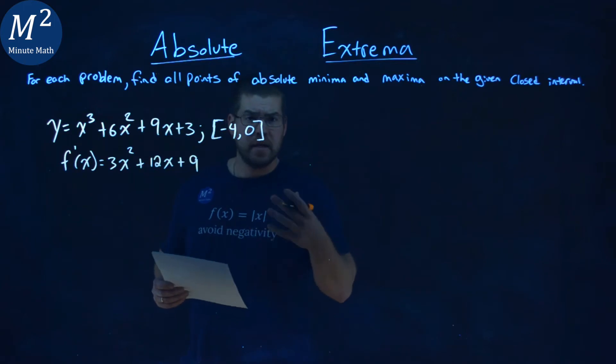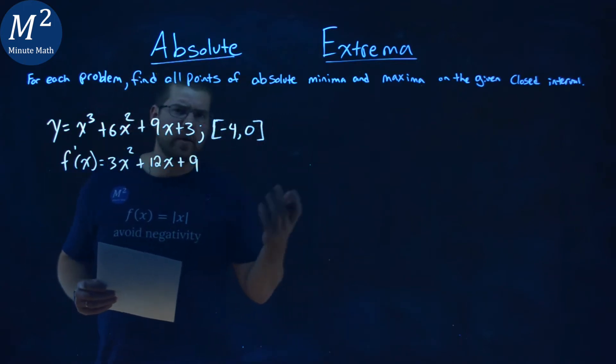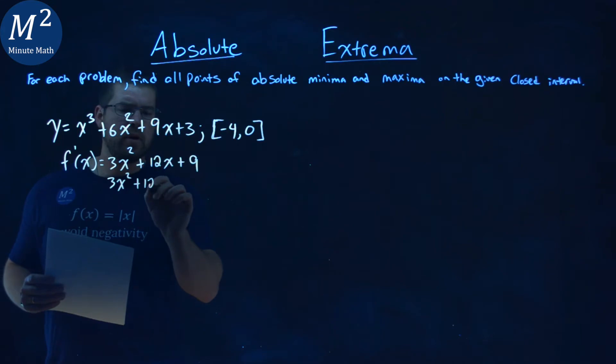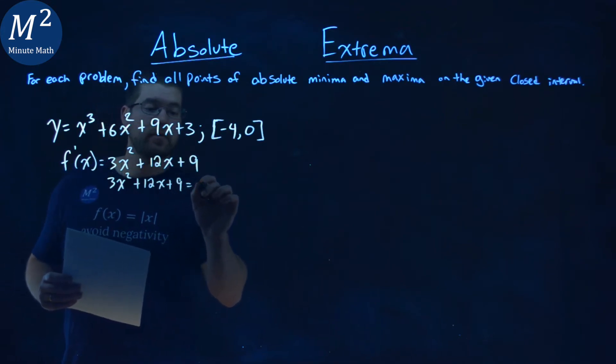We take our derivative and set it equal to 0 and solve to find our critical values. 3x squared plus 12x plus 9 equals 0.